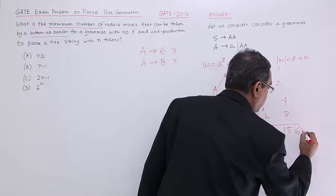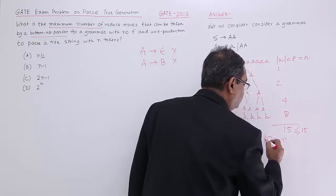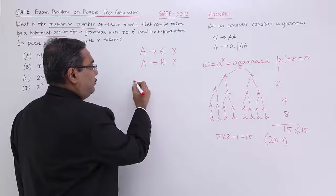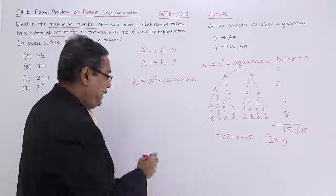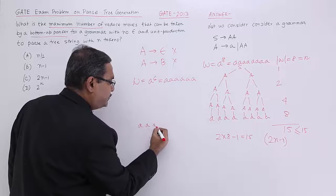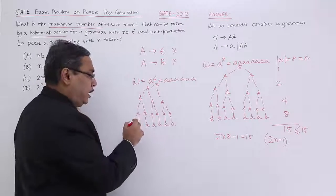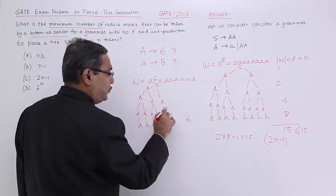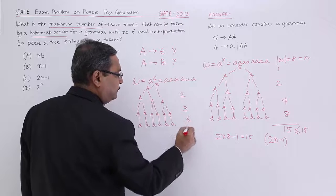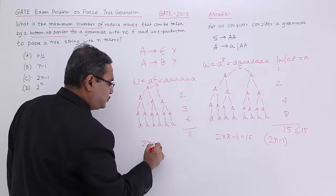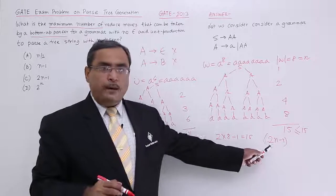So 15 equals 2n minus 1, confirming that the answer is 2n minus 1. Let us also verify with W equal to a to the power of 6, giving us 6 A's. The derivation tree in that case gives 6 productions, then 3, then 2, totaling 11. And 2 times 6 minus 1 equals 11. So I will go with option 2n minus 1.